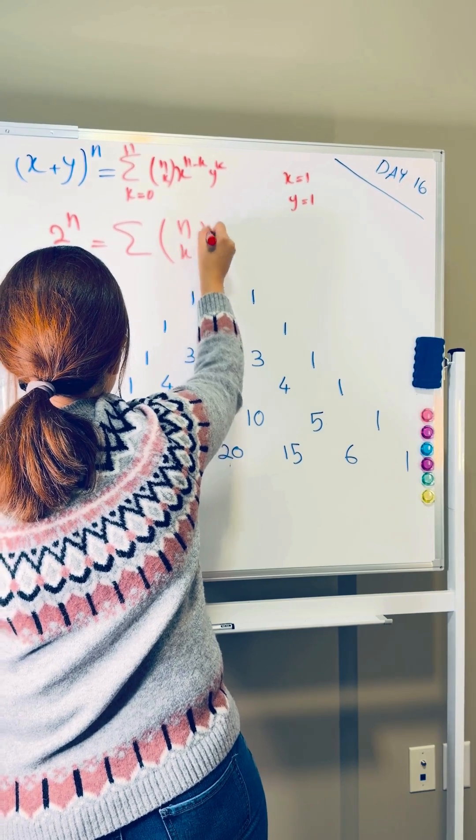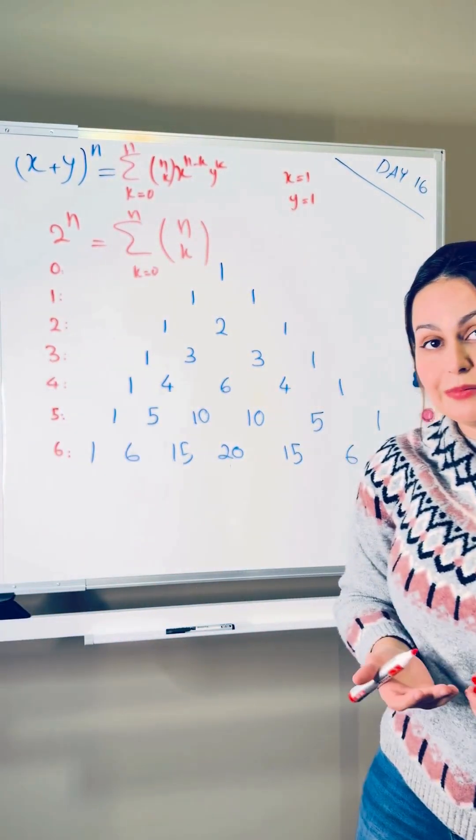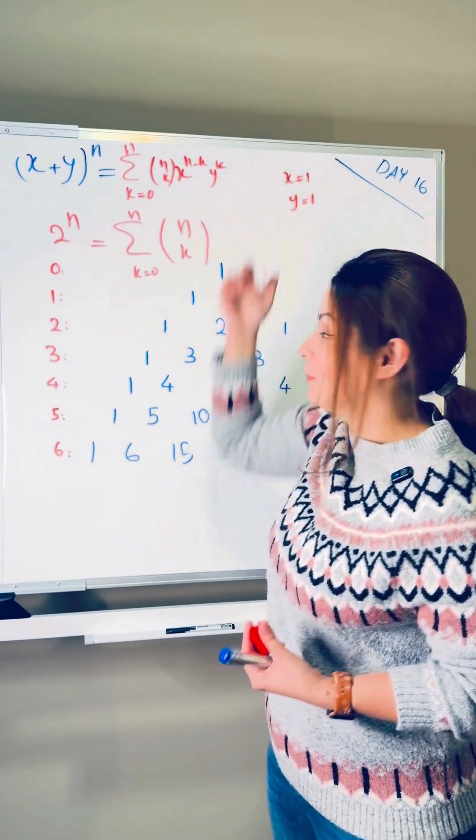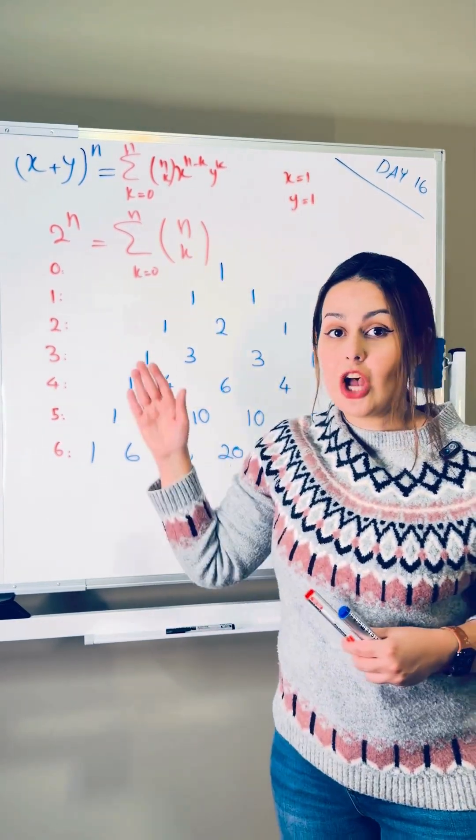Note that x to the power of n minus k is 1 and y to the power of k is 1. Now the right hand side is all the terms in the nth row of Pascal's triangle.